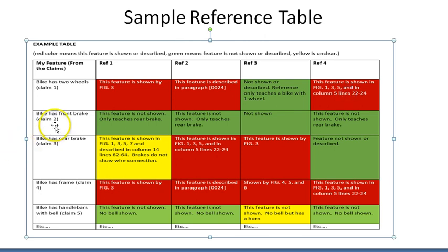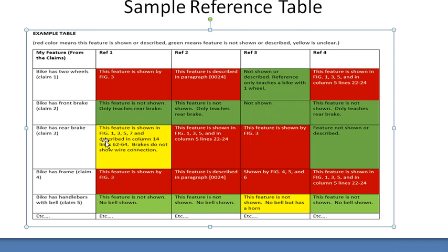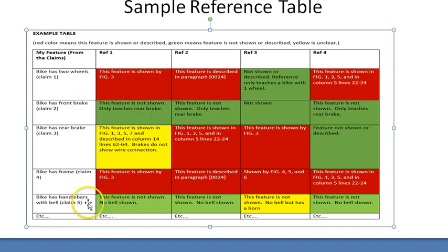When we get to our second feature — that the bike has a front brake — I went through each of these references and couldn't find any mention of a bike with a front brake, not in the figures and not in the text. So I've color-coded each of those cells green. If you're not sure about something, color-code it yellow. Reference three has a bike with a horn, not a bell, so that might be a tougher sell since the patent office might say it would be obvious to substitute a horn for a bell. But I think we could make a solid argument that no reference found by the patent office has handlebars with a bell.